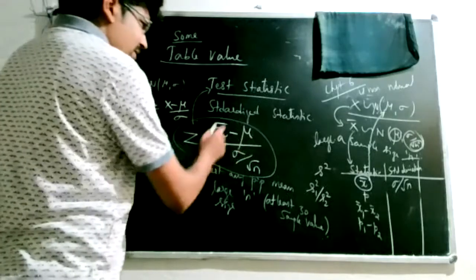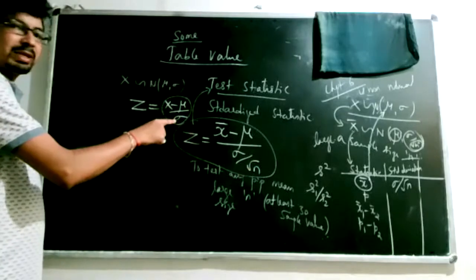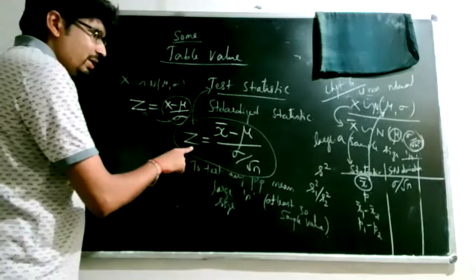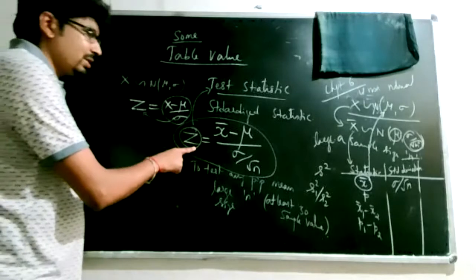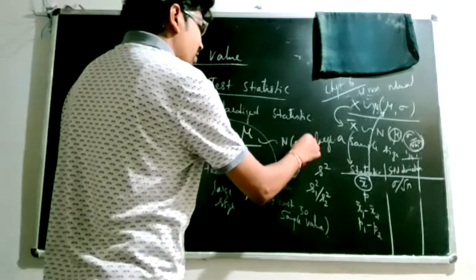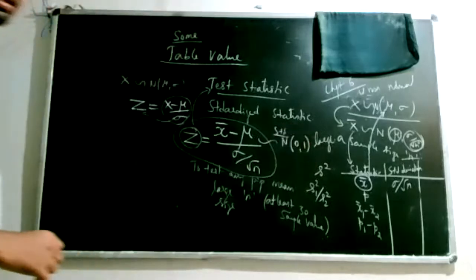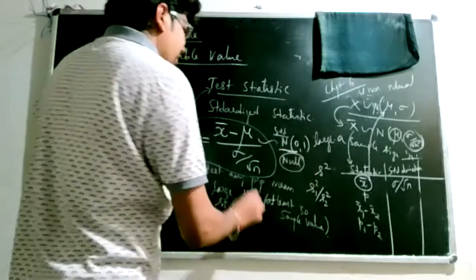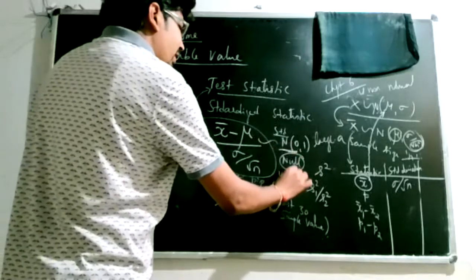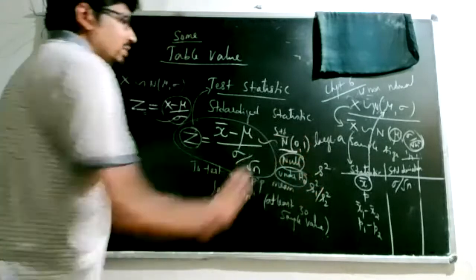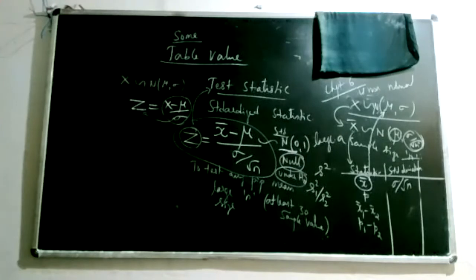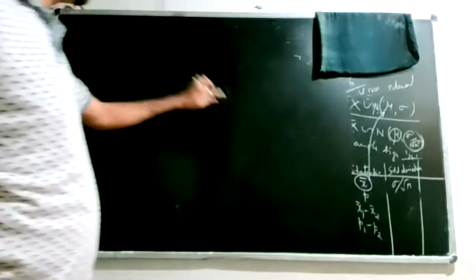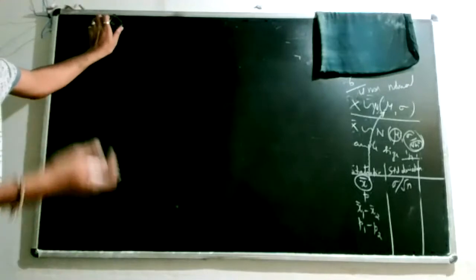This standardized form z also has a distribution — the standard normal N(0,1), theoretically called the null distribution. The test statistic follows this distribution only under the null hypothesis, hence the name. Distributions like t, chi-square, F, and normal are all null distributions. Tests are broadly classified into large sample tests and small sample tests.